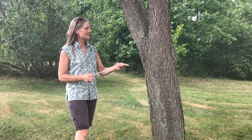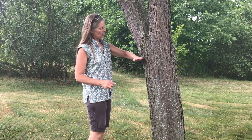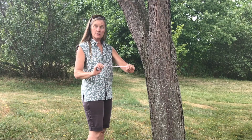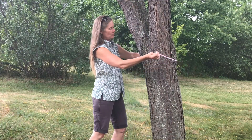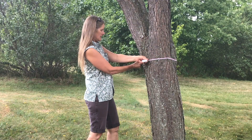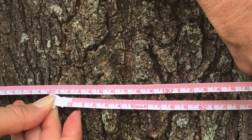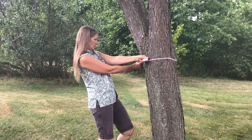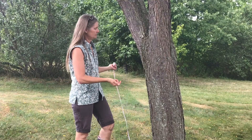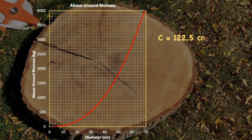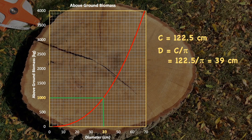So we're going to measure the diameter of this tree. We do diameter at breast height — roughly about here. I'm going to use the centimeter side of my tape measure, wrap it all the way around the tree, and we get 122.5 centimeters — that's the circumference of the tree. Once we've got the diameter for our tree species, we can read the biomass off the graph. This honey locust with a diameter of 39 centimeters has an above-ground biomass of 1,000 kilograms — that's one metric ton.